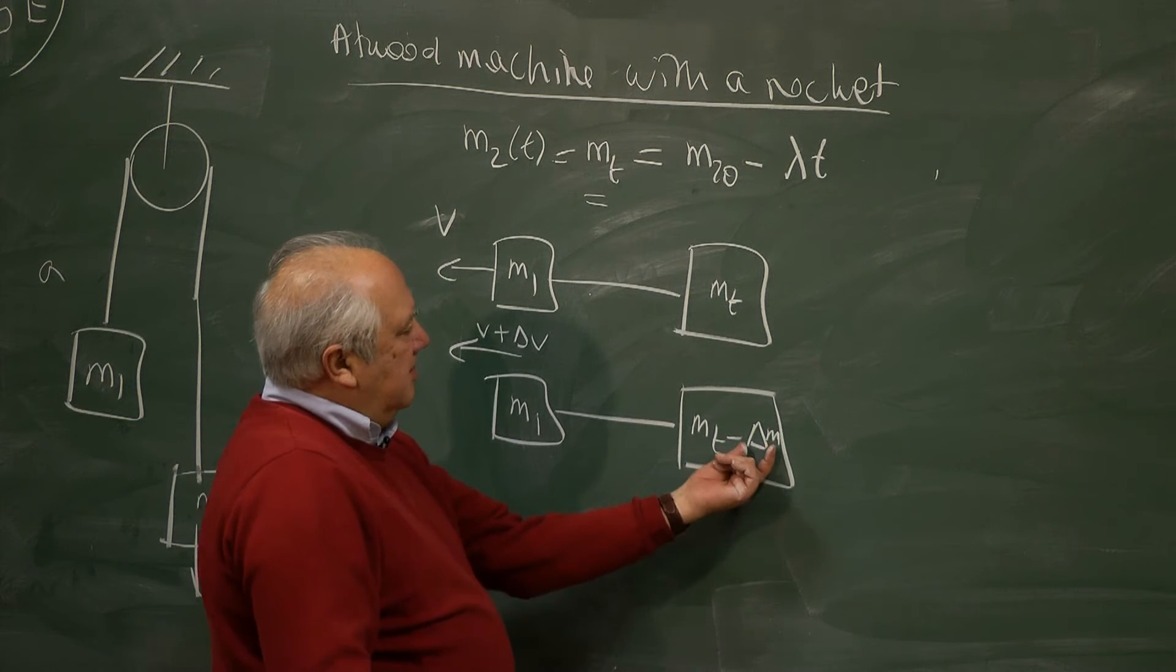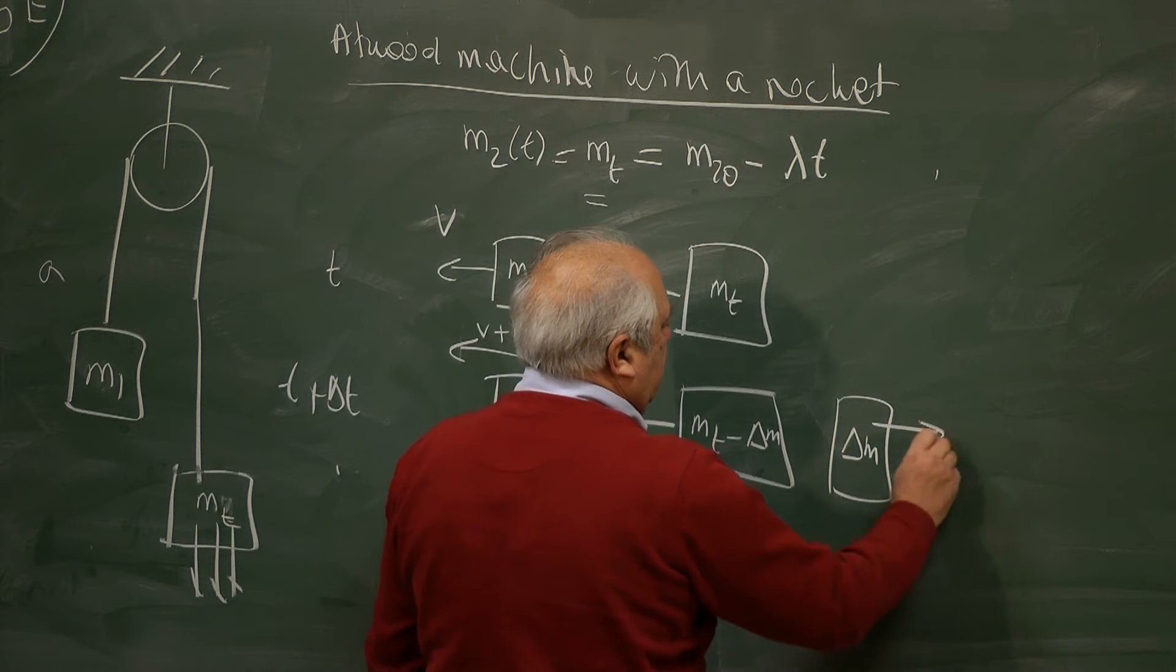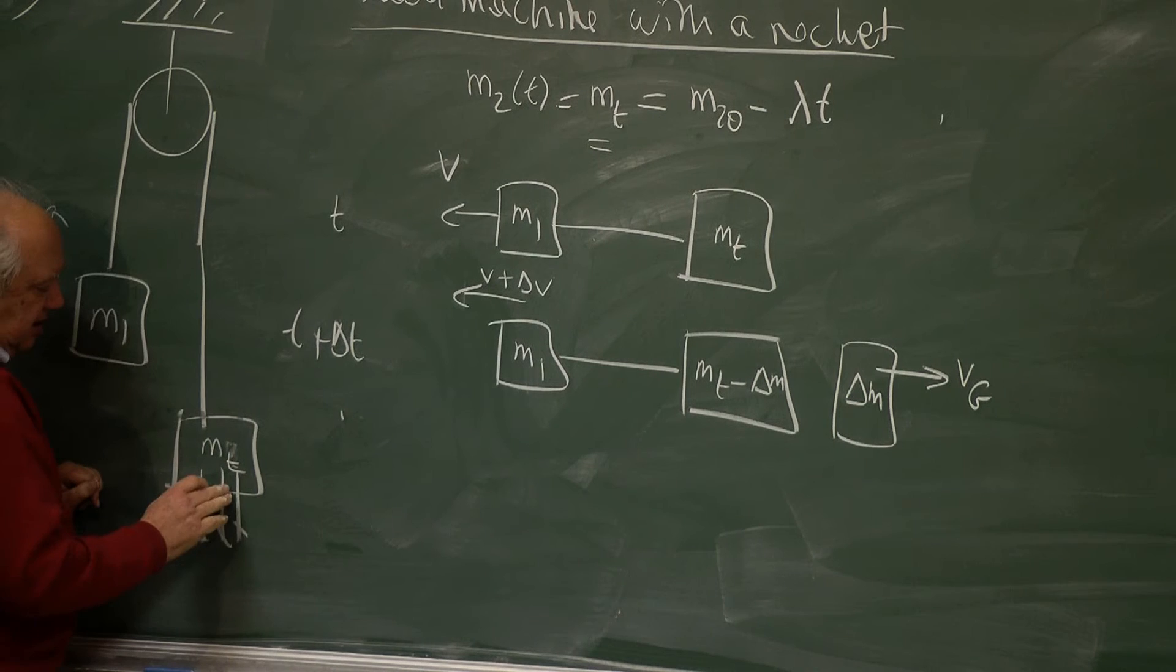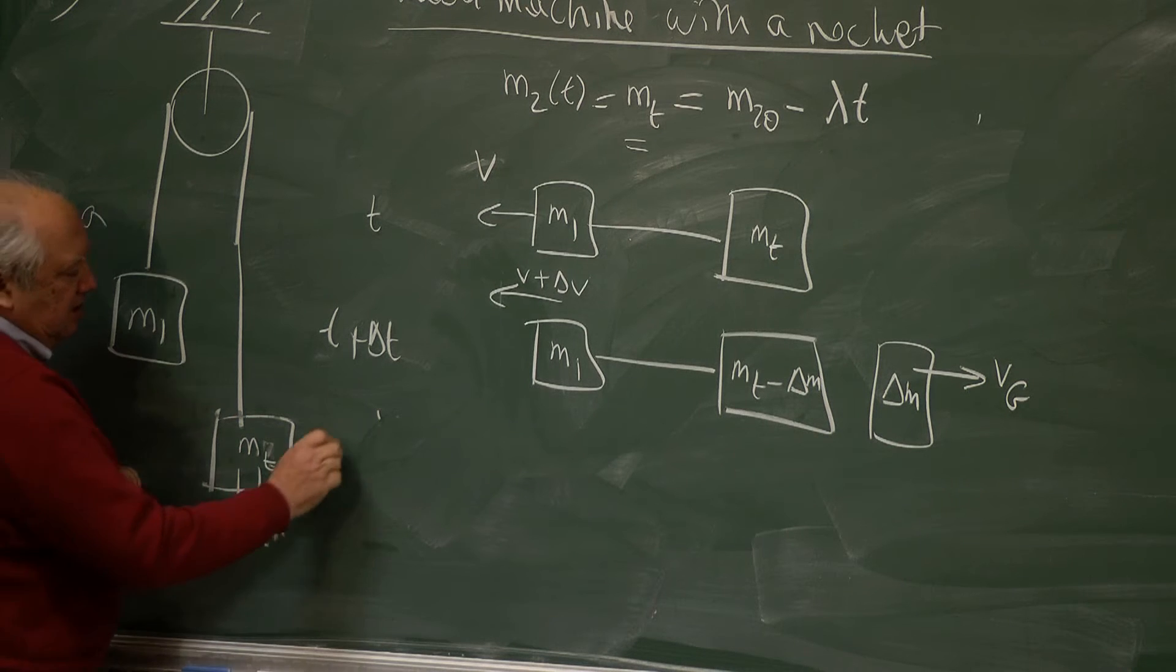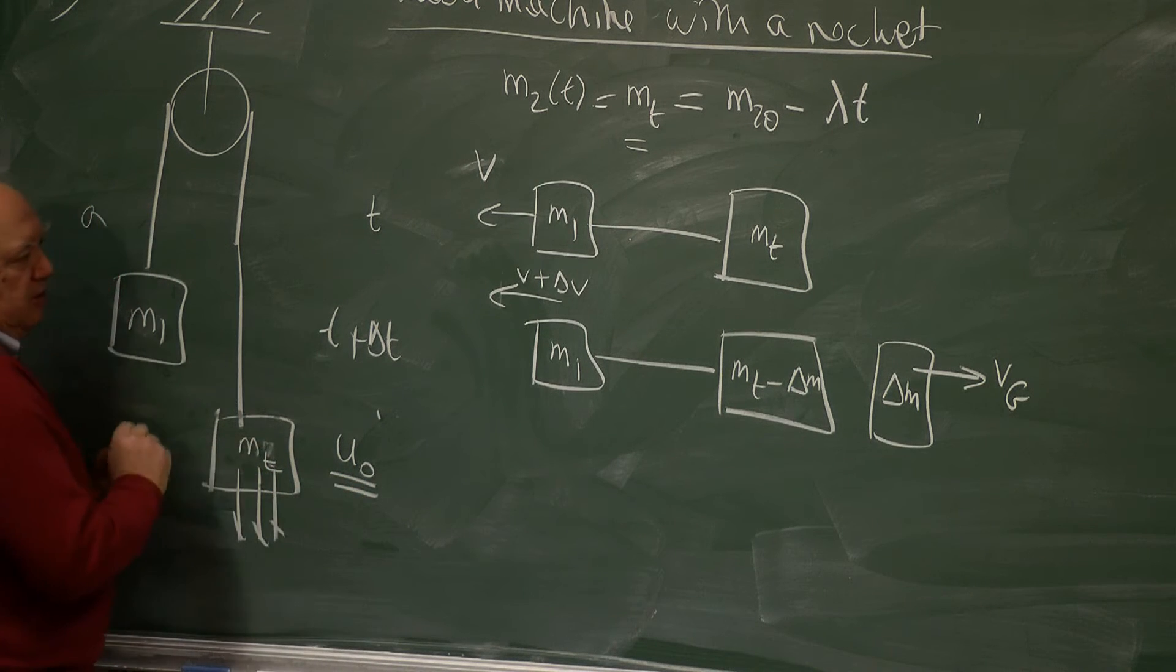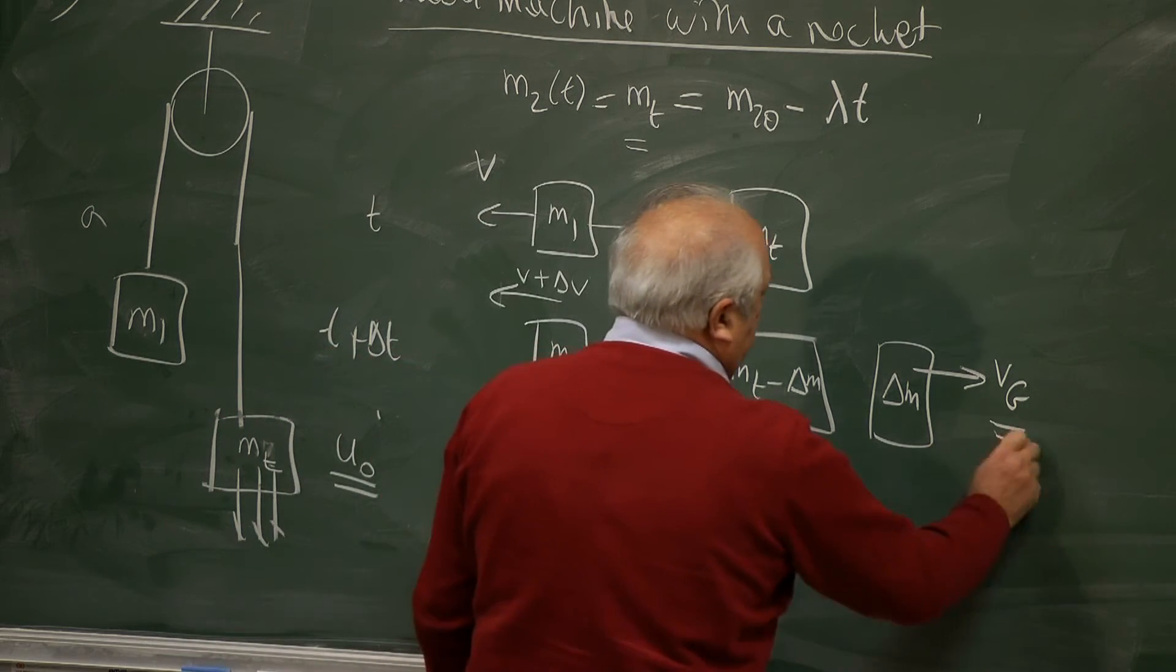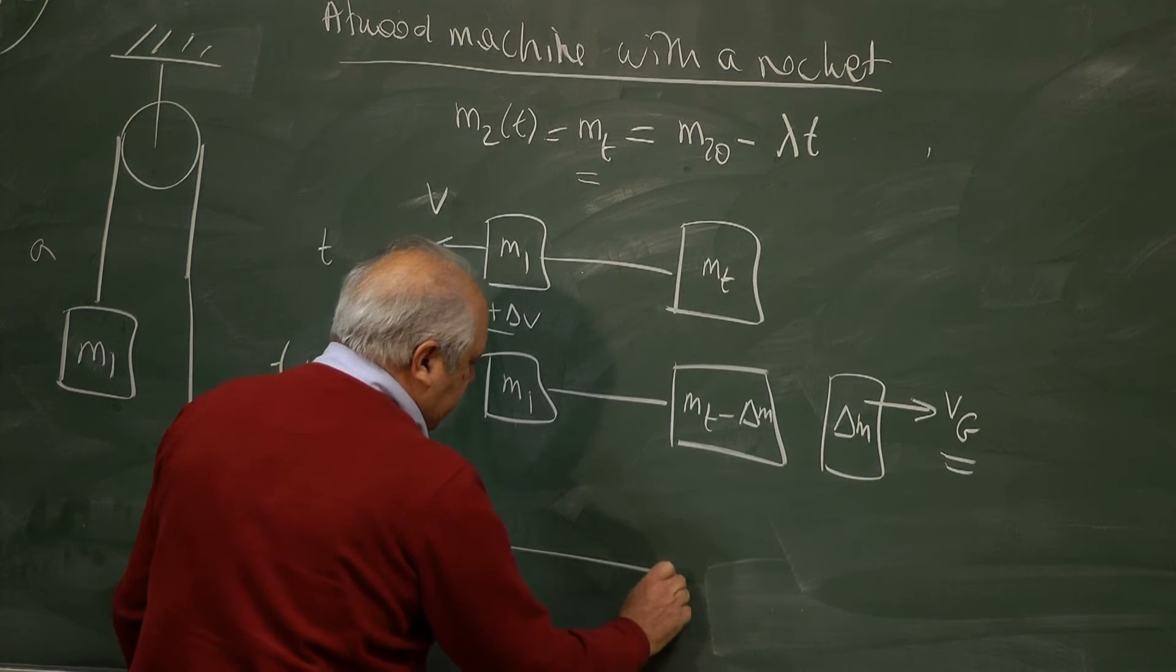We lost a mass delta M in the system. And it is moving to the right with some velocity with respect to ground. Now the ejection mechanism is such that the internal mechanism, the pump or whatever it is, ejects mass with speed U zero with respect to this mass. So we have to find out what Vg is.